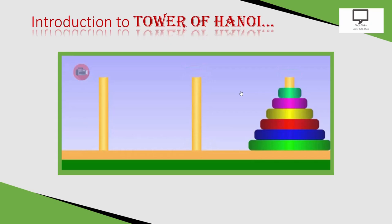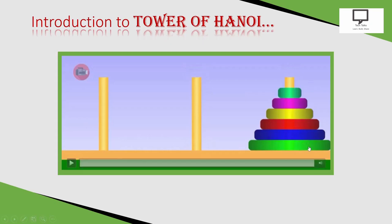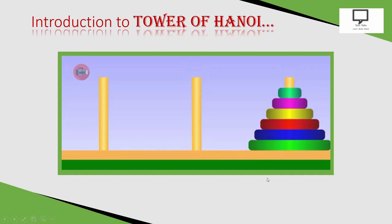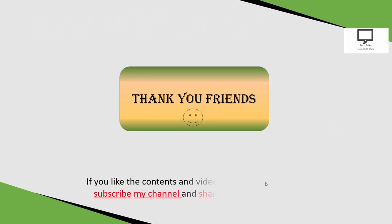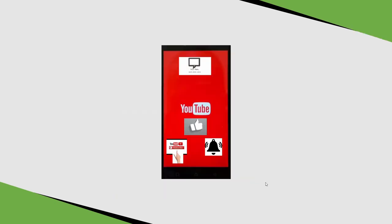Here you can see the third stack is holding all the discs in a proper sequence — the largest disc is at the bottom, and according to size in decreasing order they are placed one by one, with the smallest disc on the top. Thank you friends for listening and watching this video. I hope you will try to implement the Tower of Hanoi with the help of recursion and the stack. If you like the content and the video, please like the video, subscribe to my channel, and share it with your friends. Thank you, happy learning, happy data structuring, keep watching!